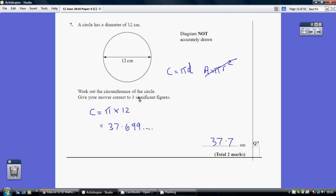Now, three significant figures means you just write down three numbers in total. One, two, three. Do I round this one up? I look at the next one. Yes, I do. So, 37.7. Remember, circumference is the length all the way around the outside of the circle.